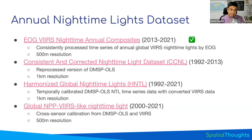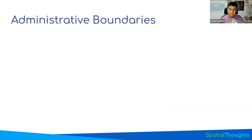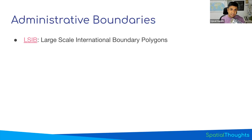For this project, we're going to use the annual nighttime lights composites from 2013 to 2021. Our project also requires computing stats over administrative boundaries, so we need a dataset for those. If you want country-level boundaries, I recommend using LSIB — these are good country boundaries you can use to compute country-level statistics.